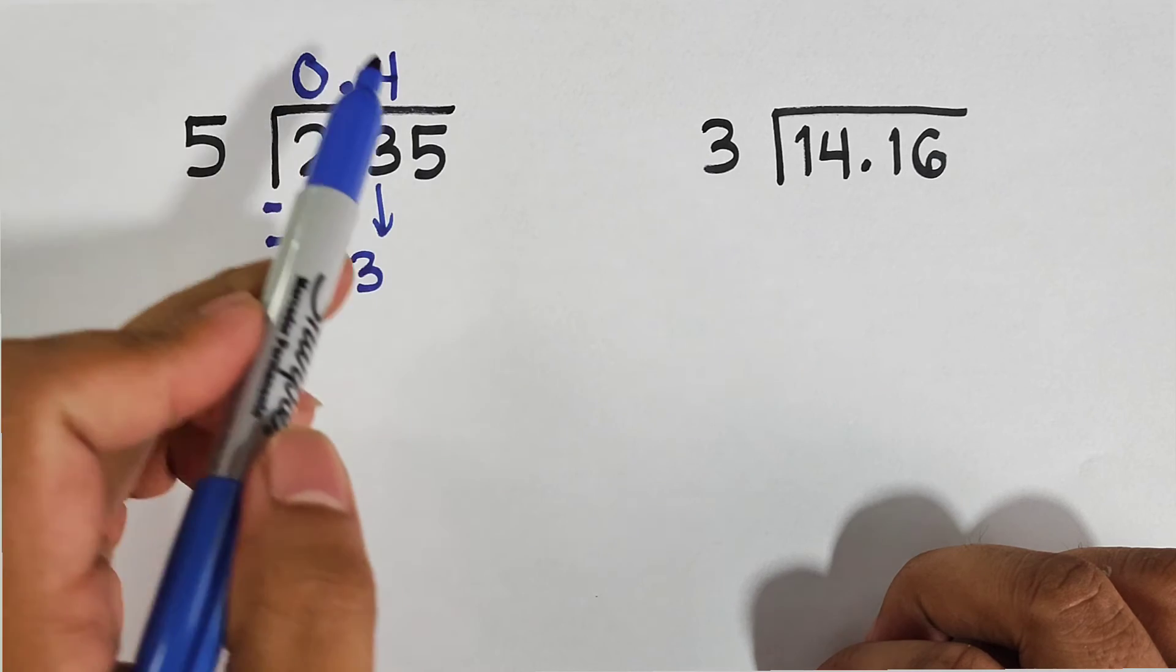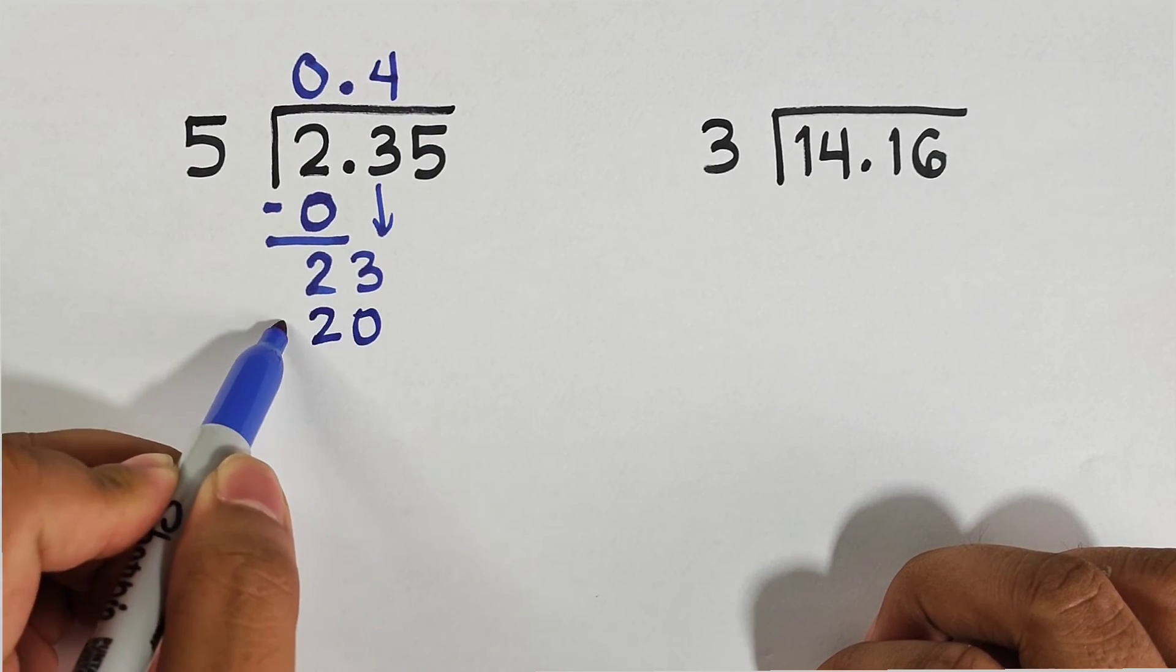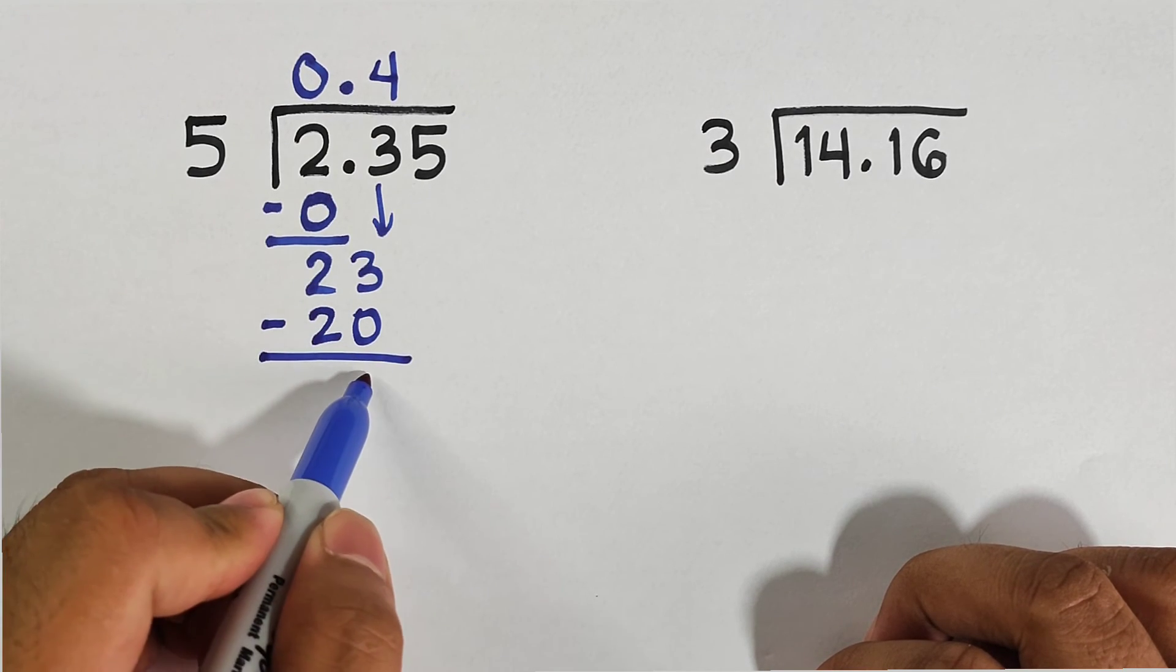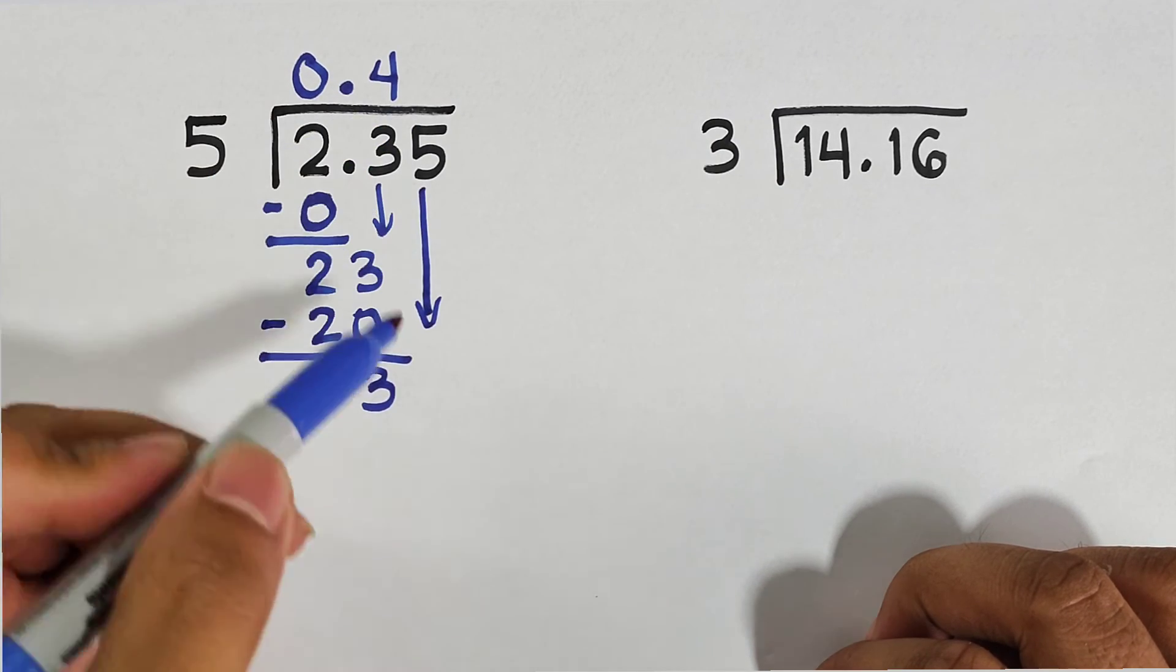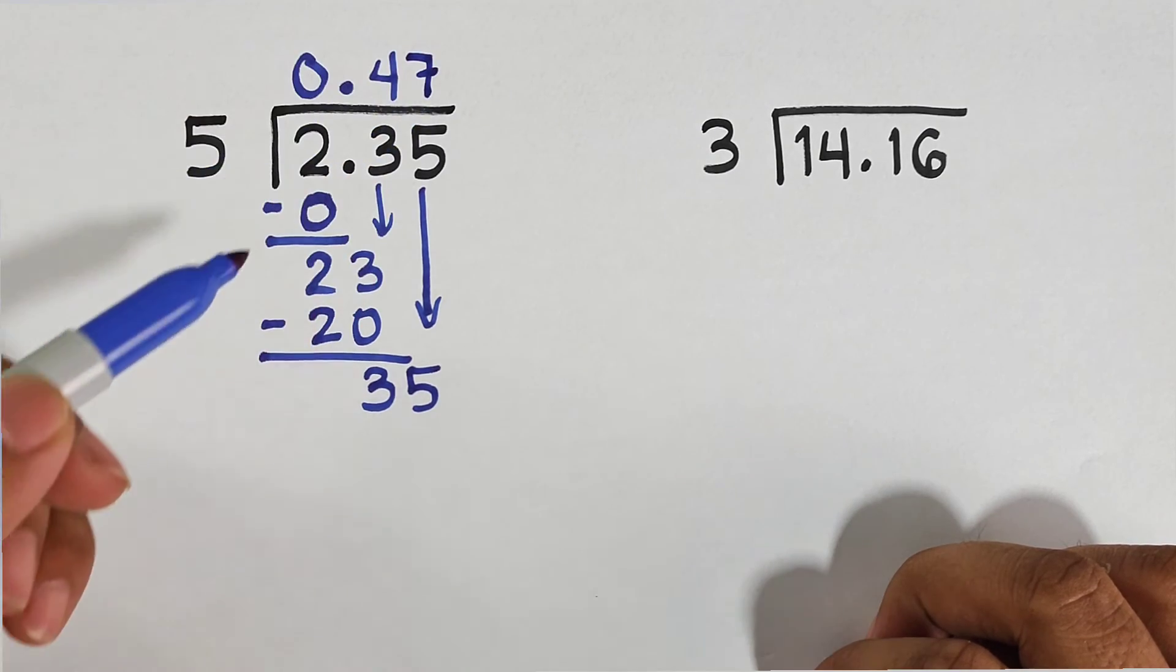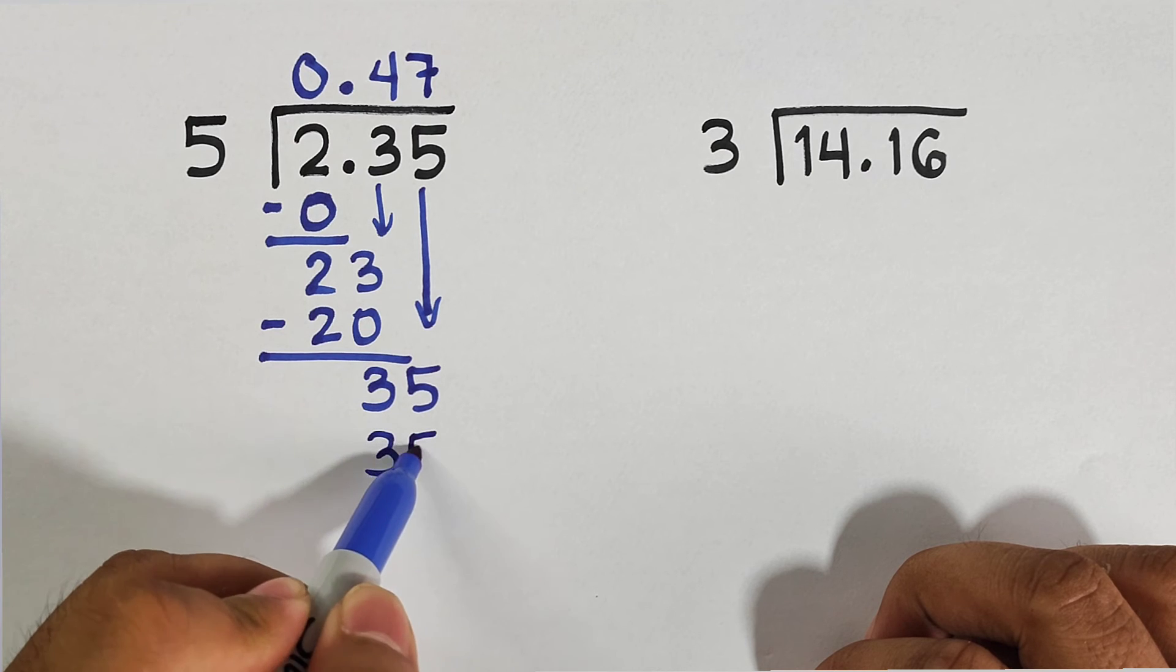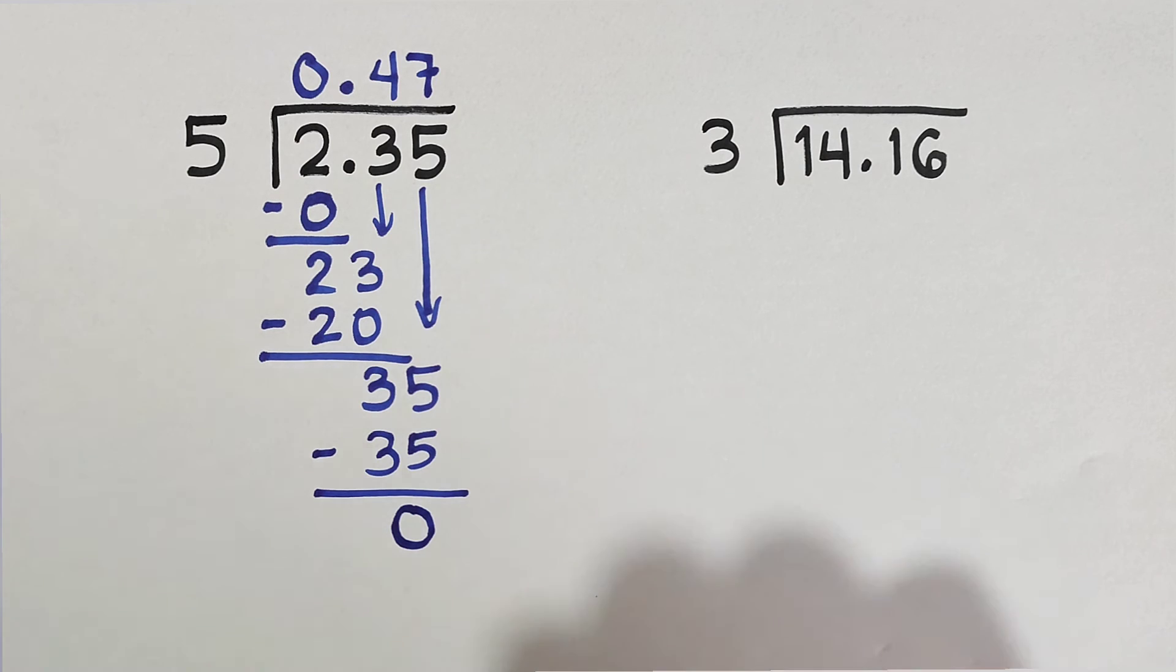4 times 5 equals 20. Subtract these numbers, 23 minus 20 is 3, and we have a number to bring down. We have here 35. So 35 now divided by 5 equals 7. 7 times 5 equals 35.